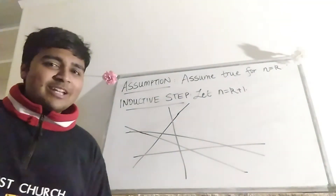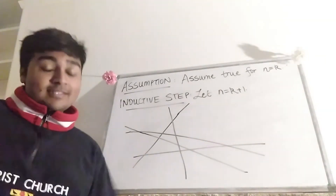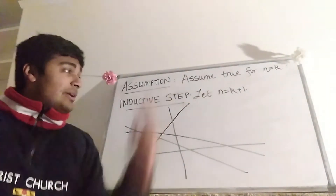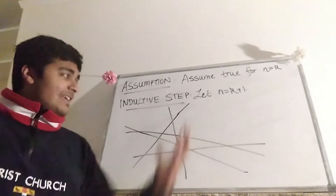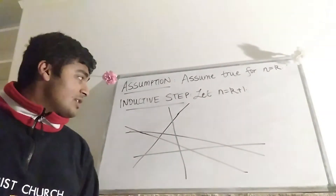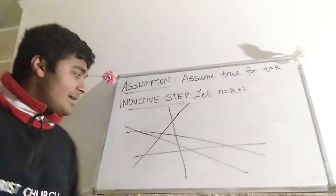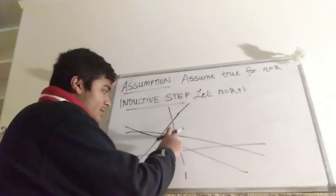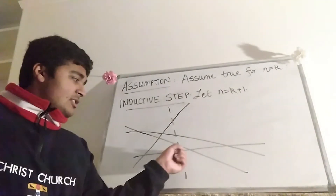We assume it holds for n equals k: if we take any k distinct straight lines on the xy plane, we can always colour them in the desired way. Now for n equals k plus 1, suppose we have k plus 1 distinct lines. What we're going to do is take one of these lines and remove it temporarily — I'll turn it into a dotted line — so we know where it was, and then we'll add it back in a moment.